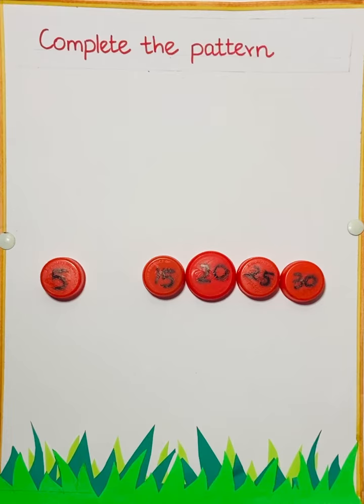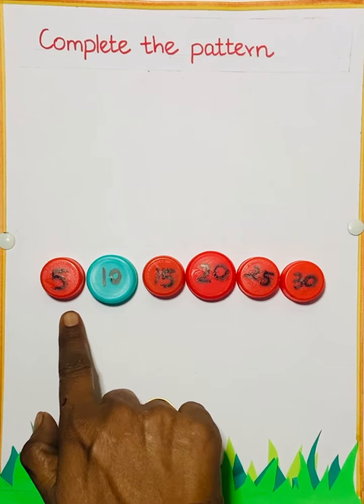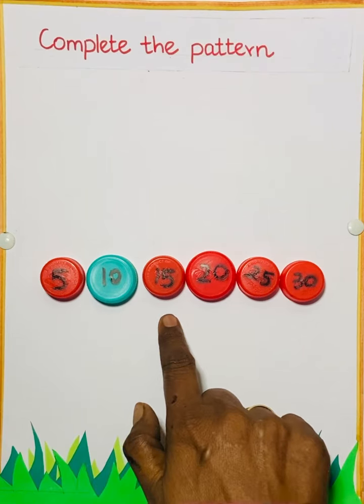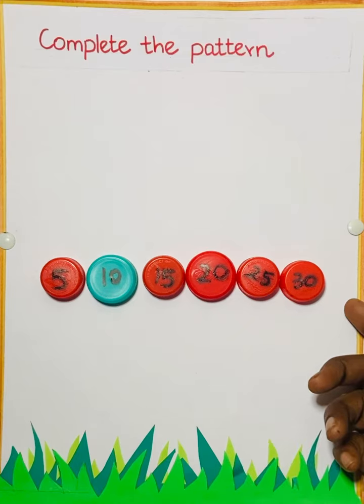5, 6, 7, 8, 9, 10. So 10. Now read the numbers. 5, 10, 15, 20, 25, 30. After 30, 35, 40. And it will go on.